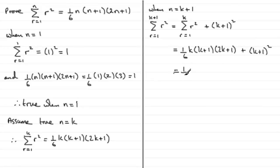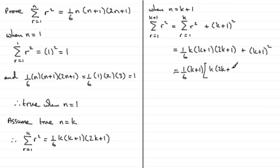So we pull out one sixth times k plus 1 as a common factor. Inside the square bracket, to recover the first term we need k times 2k plus 1. For the second term, since we've already pulled out one sixth, we make it six times bigger, giving plus 6, and since we've pulled out k plus 1 as well, that reduces to just k plus 1.